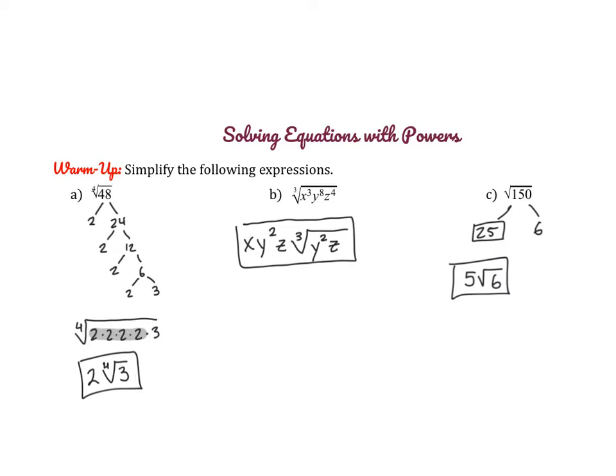For part B, cube roots, you're looking for groups of three. Three goes into three once, so x to the power of one. Three goes into eight twice with a remainder of two, and three goes into four once with a remainder of one.